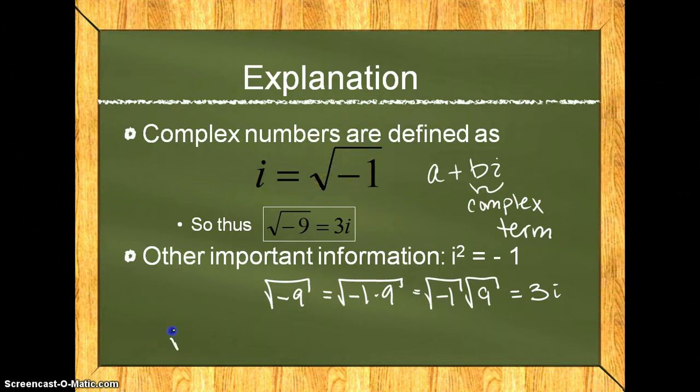If you ended up with something like the square root of negative 10, where 10 can't be simplified because it's 5 times 2, you would rewrite it as i times the square root of 10, and the square root would still be there.